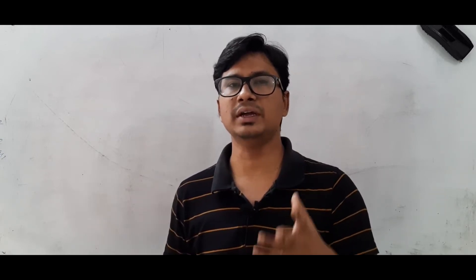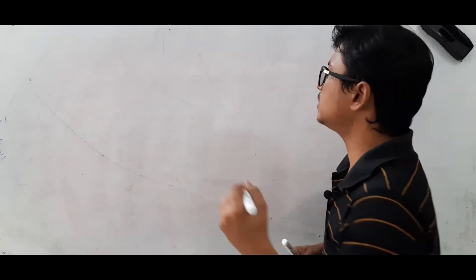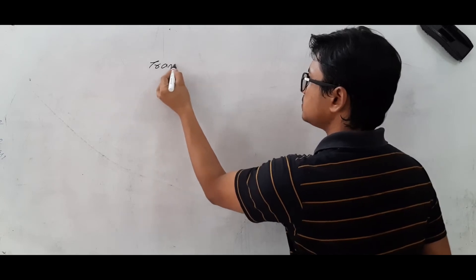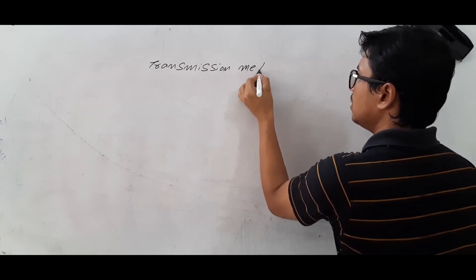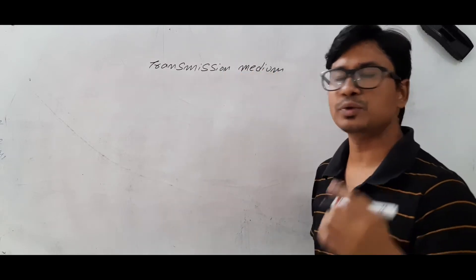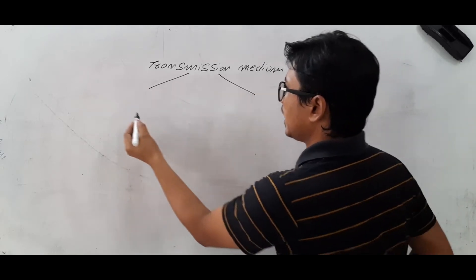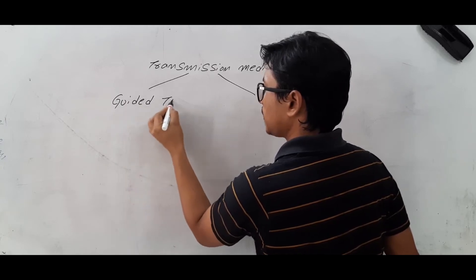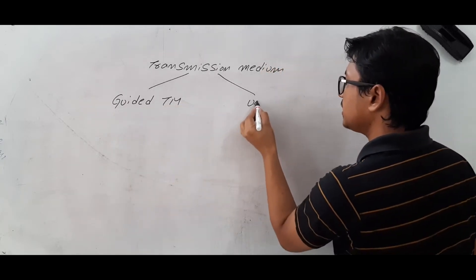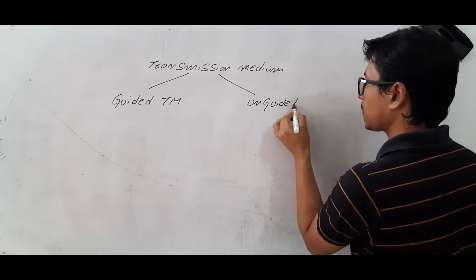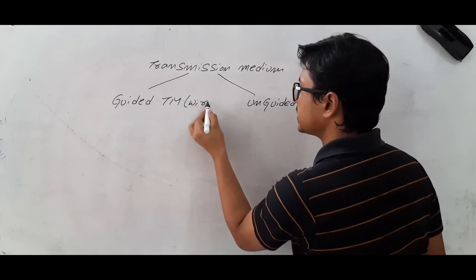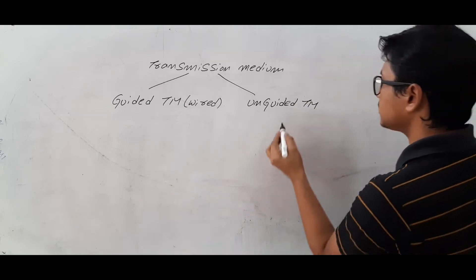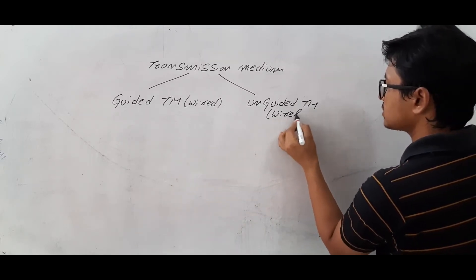So we need to have a medium to transfer data. The transmission medium is broadly classified into two types: one is the guided transmission medium and the other is the unguided transmission medium. The guided transmission medium can also be called wired communication, whereas the unguided transmission medium is called wireless communication.